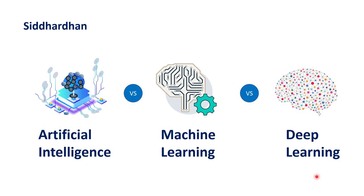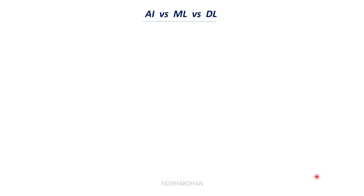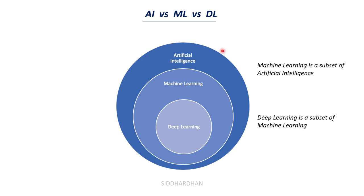This is the first question someone would ask you in a machine learning interview to see if you really know about this. These are not three completely different things. Artificial intelligence is a broader field, machine learning is a subset of artificial intelligence, and deep learning is further a subset of machine learning. So AI is the broadest field, ML is a subset of it, and deep learning is again a subset of machine learning.